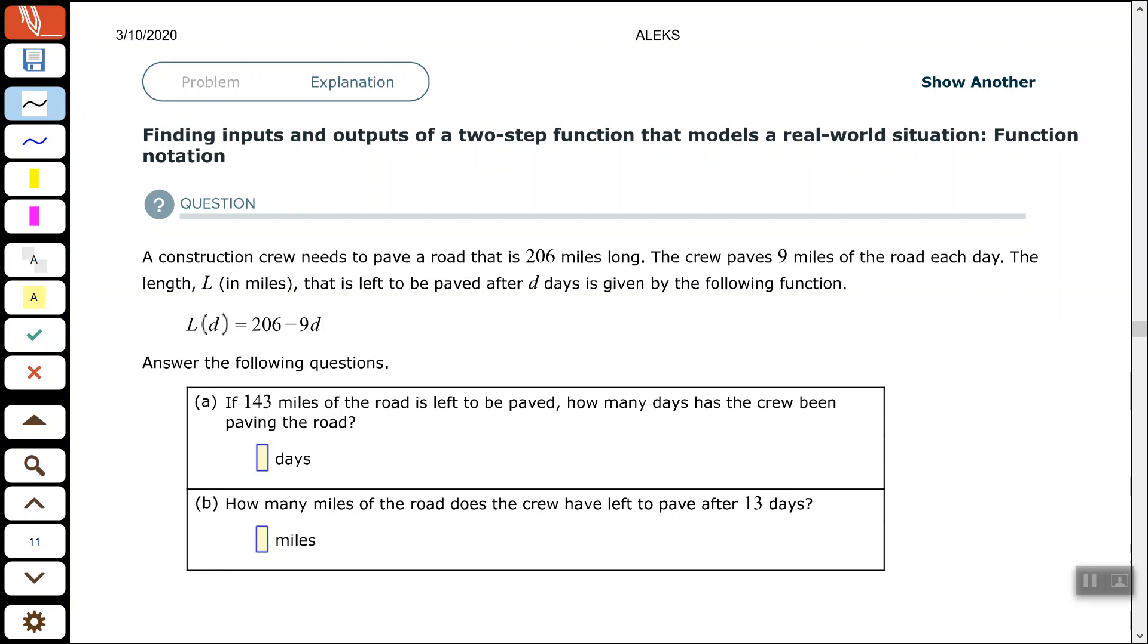Hey, good people. Arthur Morris here. Hope all is well. In this video, we're looking at finding inputs and outputs of a two-step function that models a real-world situation. You may want to pause the video and write down the problem.